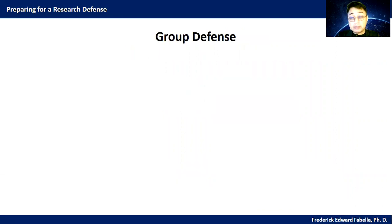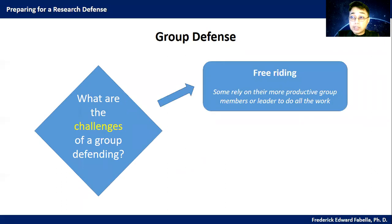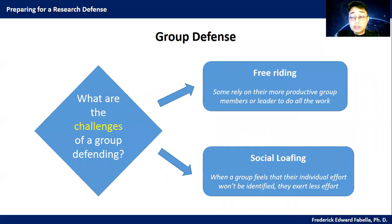So let's talk about the group defense. What are the challenges of a group defending? We have two major challenges. One is free riding — some rely on their more productive group members or leader to do all the work. Another is social loafing: when a group feels that their individual effort won't be identified, they exert less effort.